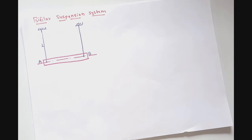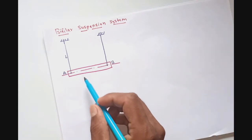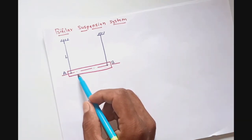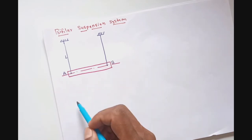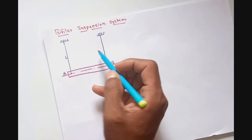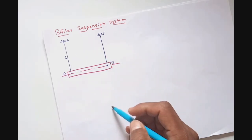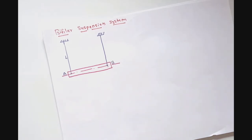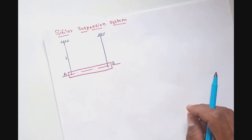Hello friends, in this video we will derive the equation for determining the frequency of oscillations of a bifillar suspension system. First of all, let us define the bifillar suspension system. It is a flat rectangular bar or plate suspended at its two ends using strings of equal length, which are assumed to be inextensible and long enough so that the oscillations take place freely.